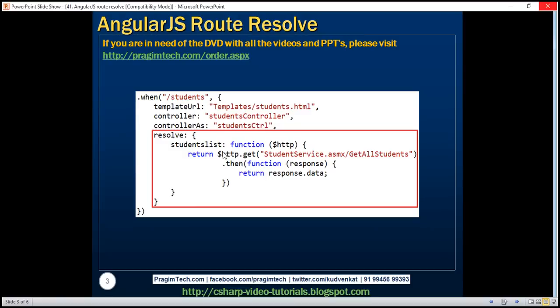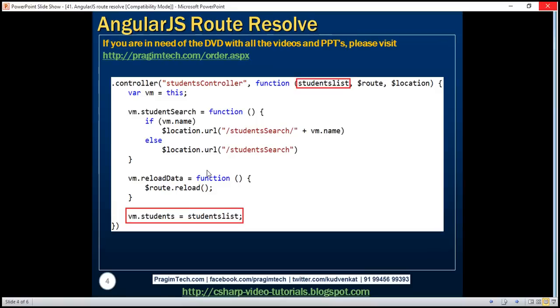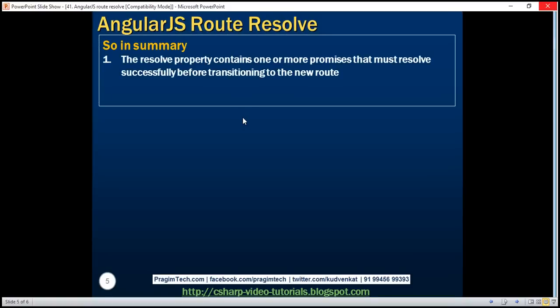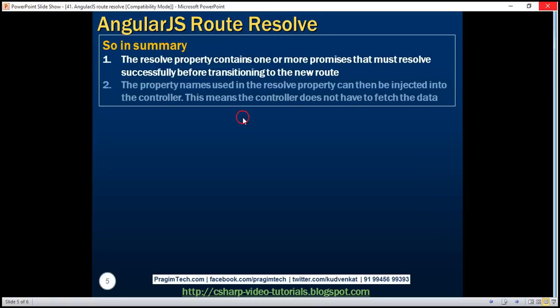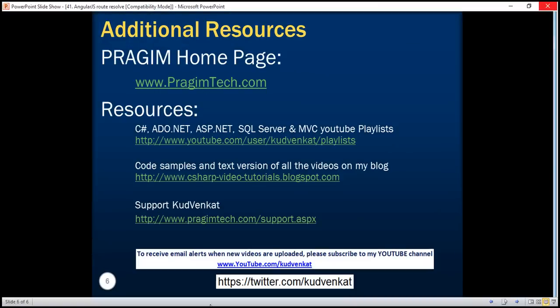Here is the change for the route itself — we're using the resolve property. And this is the change to the respective controller function, in this case the student's controller. In summary, the resolve property contains one or more promises that must resolve successfully before transitioning to the new route. The property names used in the resolve property can then be injected into the controller, which means the controller does not have to fetch the data by itself. Thank you for listening and have a great day.